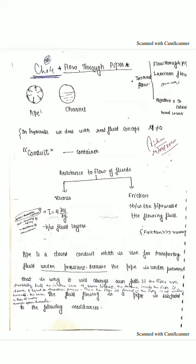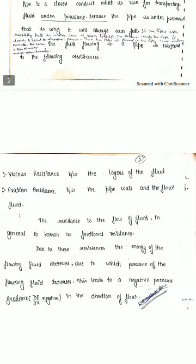What is viscous resistance? Viscous resistance is the resistance between the layers of the fluid. As we already discussed about viscosity in previous classes — viscosity is the property by virtue of which a fluid offers resistance to the movement of one layer of fluid over adjacent layers. So when viscosity acts, there is resistance between the layers of the fluid. When adjacent layers apply shear force on each other, that resistance is called viscous resistance.